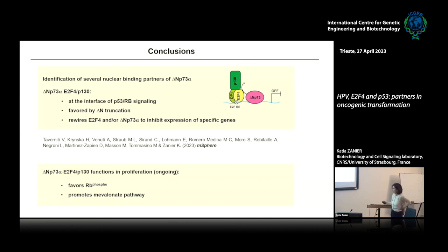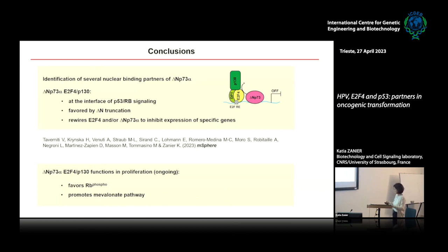To summarize, we have identified a novel nuclear complex involving ΔNp73α and are focused on characterizing the ΔNp73α–E2F4–p130 complex, which acts at the interface of p53 and RB signaling. This complex is favored by the truncation typical of delta-N isoforms and is able to rewire E2F4 and ΔN to inhibit expression of specific genes. These data are now published, and we are working to understand the contribution of this complex to proliferation, focusing on regulation of RB phosphorylation and the mevalonate pathway.